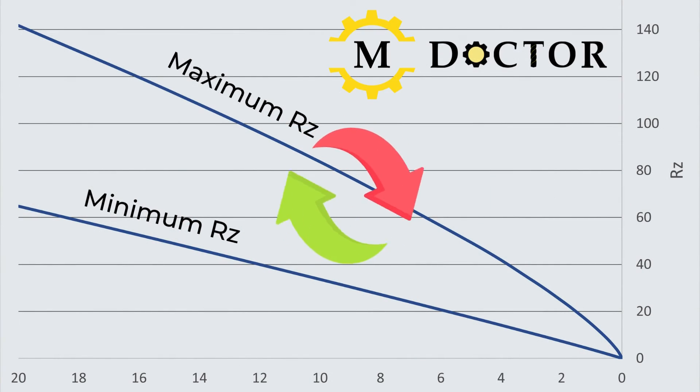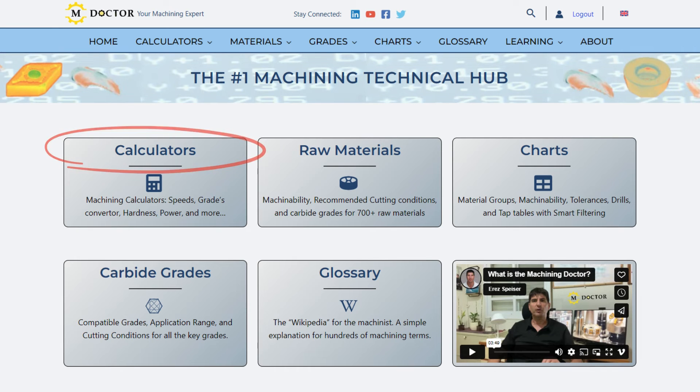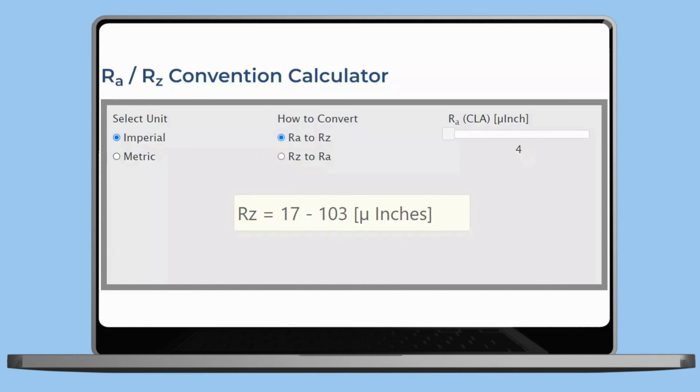But, if for any reason you still need to convert between RA and RZ, you can head over to the Machining Doctor website. Navigate to Calculators and choose the RA to RZ Converter. Select the units, move the slider, and get the results instantly.